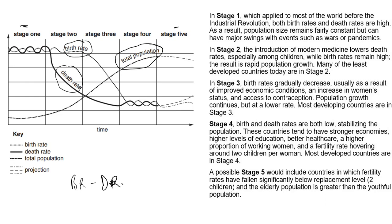At stage one, which applied to most of the world before the Industrial Revolution, both birth rate and death rate are high. Because both are high, the rate of population growth is very slow, fairly constant, and also low. This can be due to war or pandemic — there is a high rate of death and high rate of birth, so population growth is low.